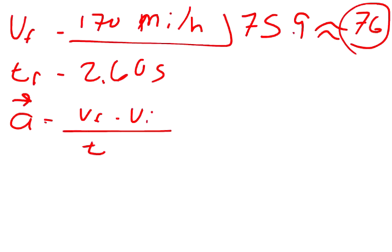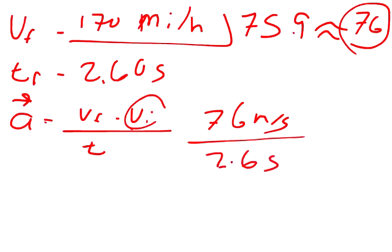I know my final velocity is 76 meters per second. The v initial started at zero, and my change in time is 2.6 seconds. That gives my acceleration 76 divided by 2.6, which is roughly 29.23 meters per second squared.